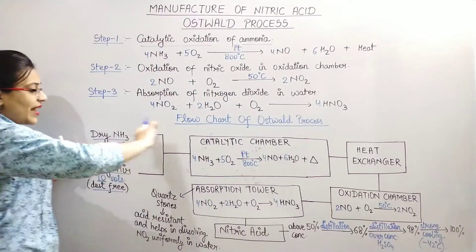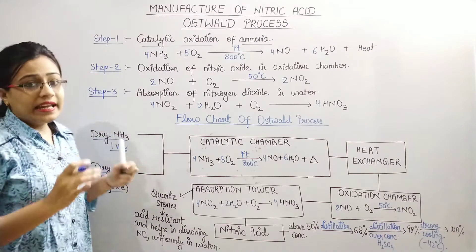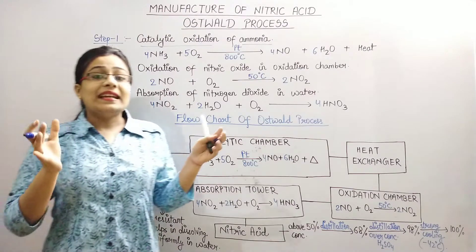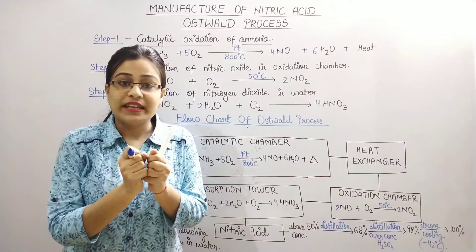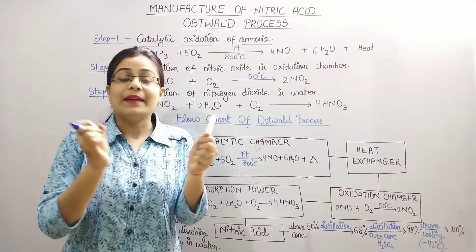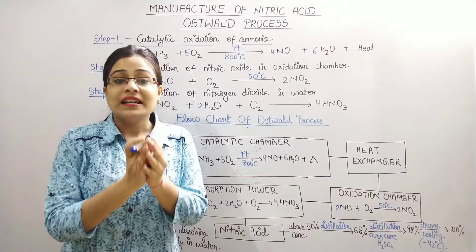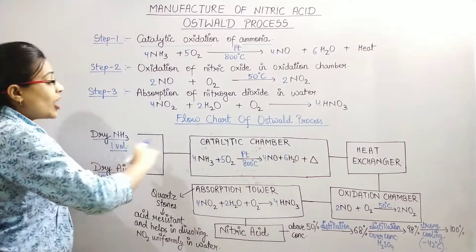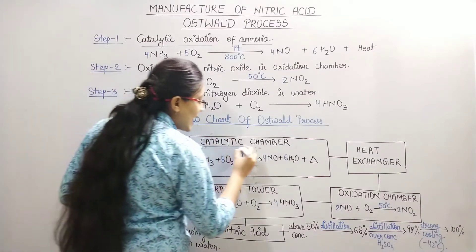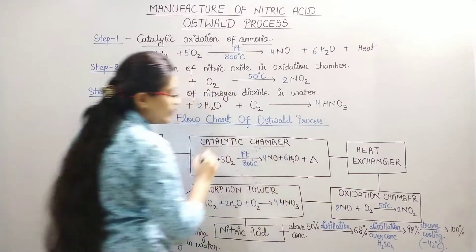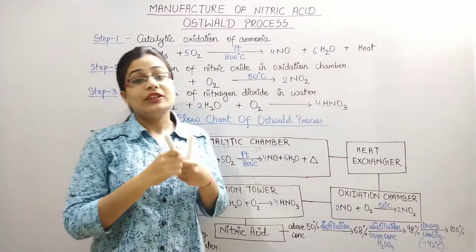One side is Dry Ammonia Gas and the other side is Dry Air. These two gases are compressed — compression and pressure are applied. Then we move on to the first chamber, which is called the Catalytic Chamber.